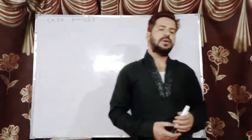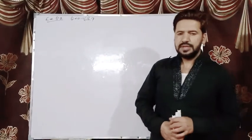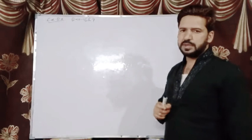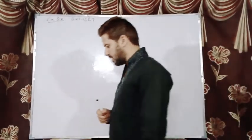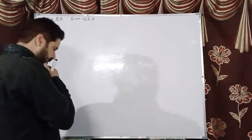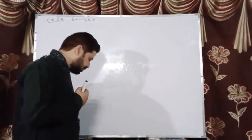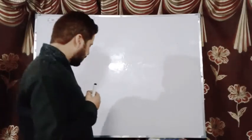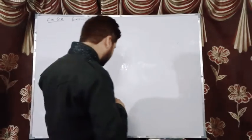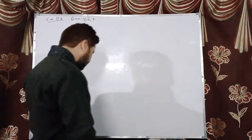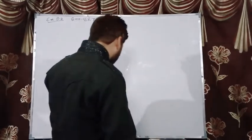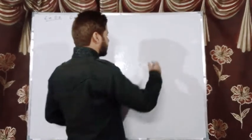Assalamu alaikum dear students, hope you will be fine by the grace of Almighty Allah. In this video lecture we are going to do the last two questions of Exercise 8.2, that is Question 6 and Question 7. Question 6 requires us to prove that the line segment joining the midpoints of opposite two sides of a quadrilateral bisect each other.